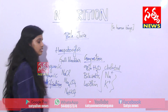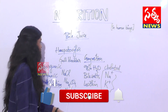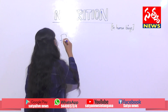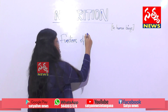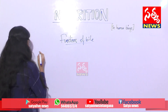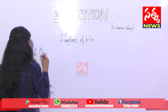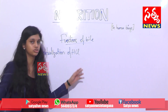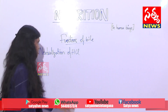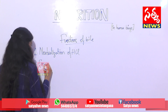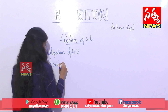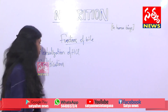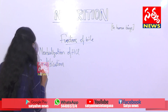Emulsification is the process of digesting larger fat globules into smaller molecules. Now the functions of bile - there are nearly five functions. Number one: neutralization of HCl - the bile juice, which is alkaline, neutralizes the acidic medium of HCl. Number two: emulsification - the organic substances such as sodium taurocholate and sodium glycocholate help in the emulsification of fats.